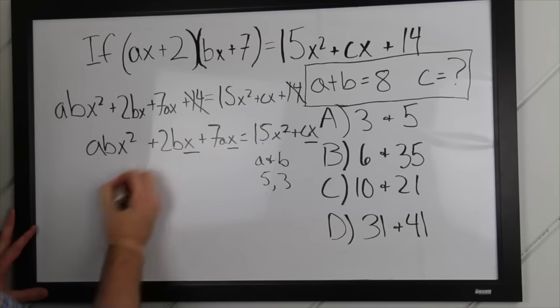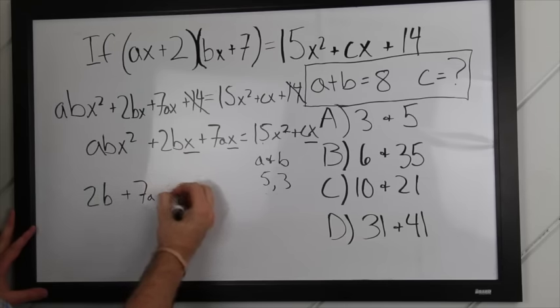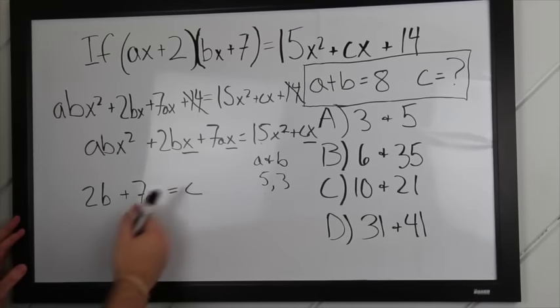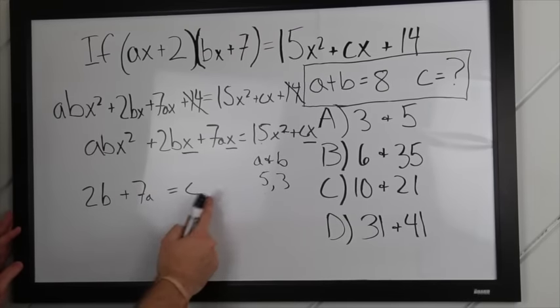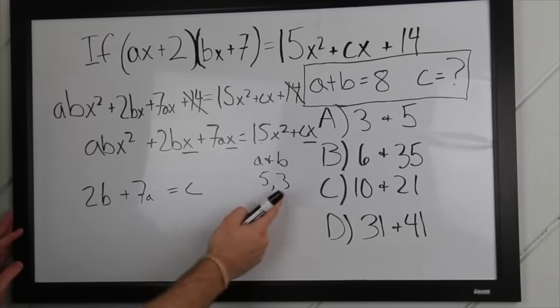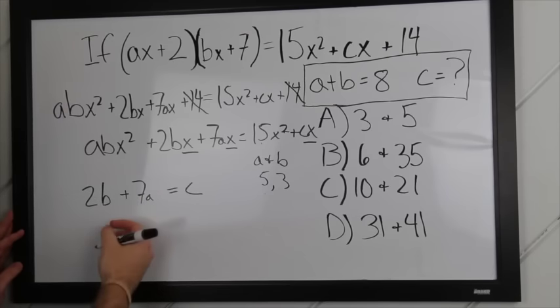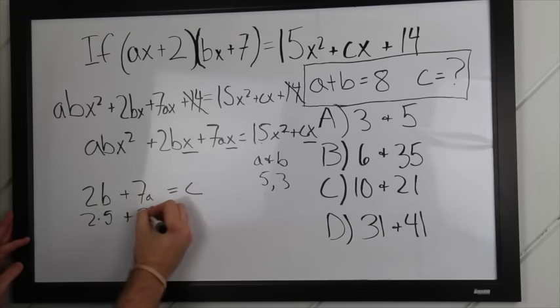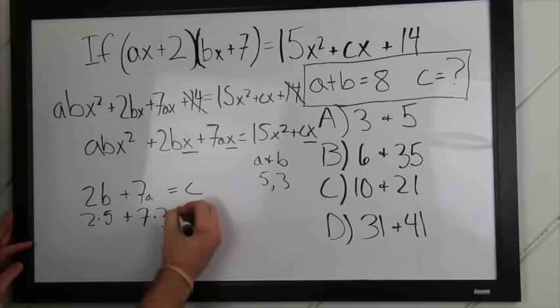So, that's saying that 2b plus 7a must equal our c that's over here. Now, if this has to equal this, we can plug in 5 and 3 for a and b. It doesn't matter which one we choose. So, let's choose 5 for b and let's choose 3 for a equals c.